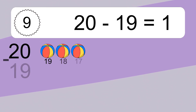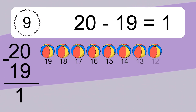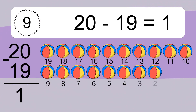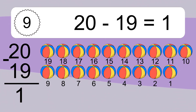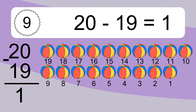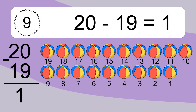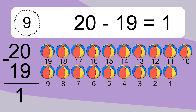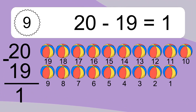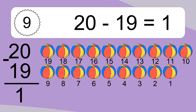20 minus 19 equals what? 20 minus 19 equals 1. Let's count it: 19, 18, 17, 16, 15, 14, 13, 12, 11, 10, 9, 8, 7, 6, 5, 4, 3, 2, 1.